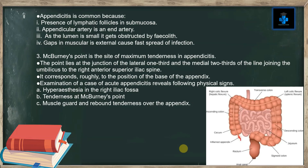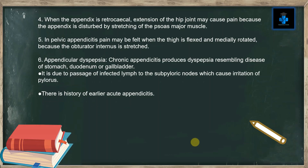Examination of a case of acute appendicitis reveals the following physical signs: (a) hyperesthesia in the right iliac fossa, (b) tenderness at McBurney's point, (c) muscle guarding and rebound tenderness over the appendix. When the appendix is retrocecal, extension of the hip joint may cause pain because the appendix is disturbed by stretching of the psoas major muscle.